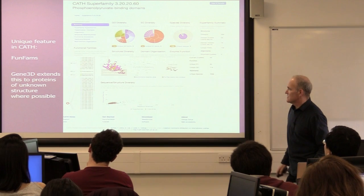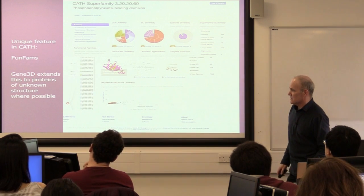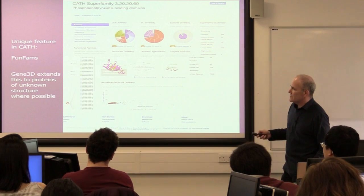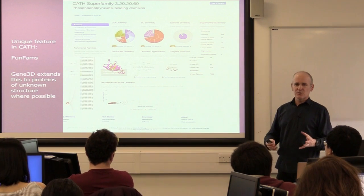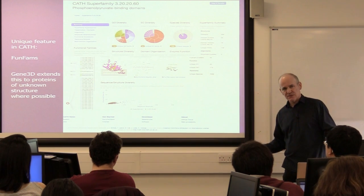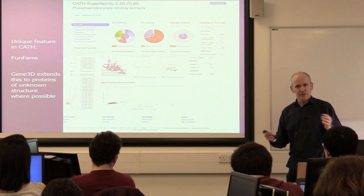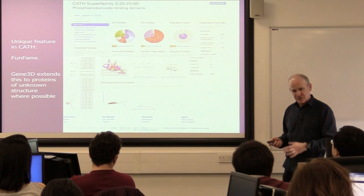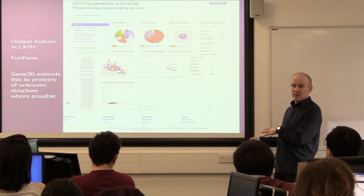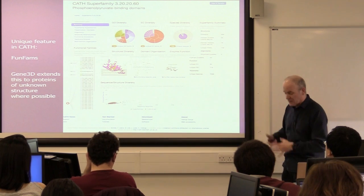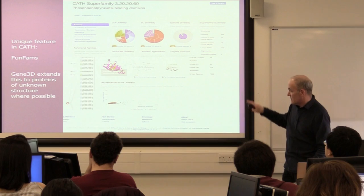Gene3D is an extension to CATH that takes domains of known structure and compares them at the functional family level to entire genomes. It pulls in sequences that aren't of known structure and aligns them against those of known structure, giving a way to transfer functional information from structures to uncharacterised sequences. You can pull down those alignments or view them on the website.